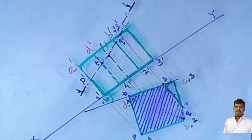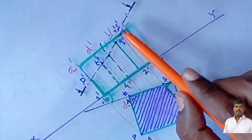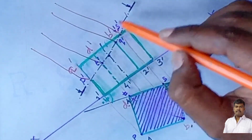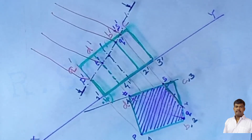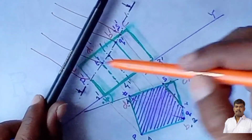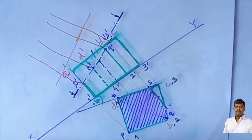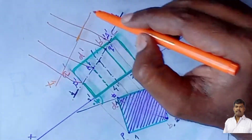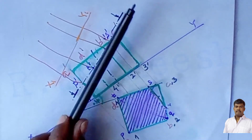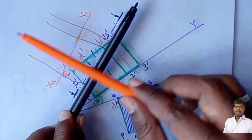To draw the true shape, draw perpendicular lines from the cutting plane line at each cutting point p, q, r, s, and t. Then draw one more line parallel to the cutting plane, away from the object to avoid overlapping. This new line is the X1Y1 reference line.